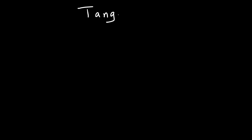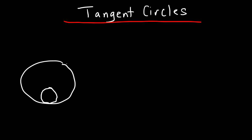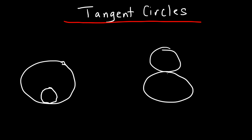Let's continue our discussion with something called tangent circles. You might be wondering what exactly tangent circles are. Here are two pictures to illustrate. Tangent circles intersect each other at exactly one point. Notice that they both meet on the same tangent line — so these are tangent circles.